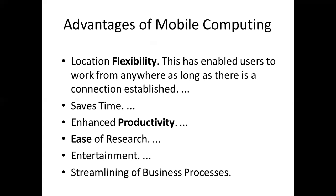Mobile computing also enables streamlining of business processes — using mobile information systems, the MIS (management information system) can be integrated so every department can collaborate. Customers can easily access business online, get feedback, and now even open a bank account using a phone, access statements, do transactions, pay customers, interact, make purchases and orders, and track deliveries right to their door. That is what we call streamlining of business processes.